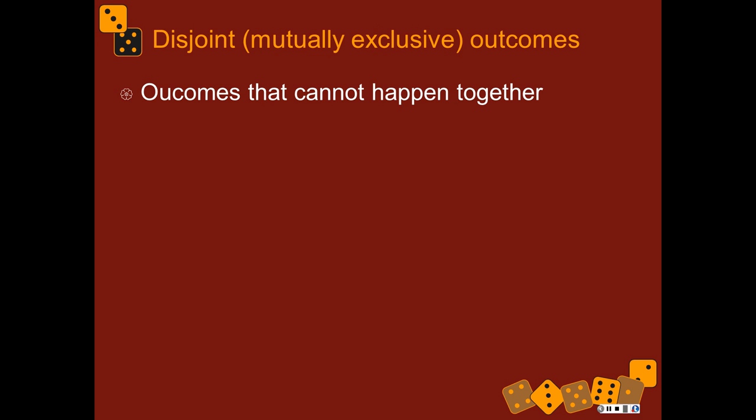So we need to talk about certain kinds of outcomes. You're talking about a random process, and certain things could happen, but there are different kinds of things that could happen. There are things called disjoint outcomes, sometimes called mutually exclusive outcomes. That means if one of them happens, then the other ones can't happen.